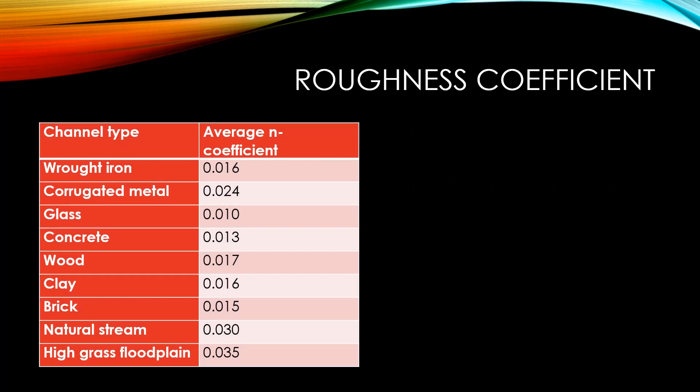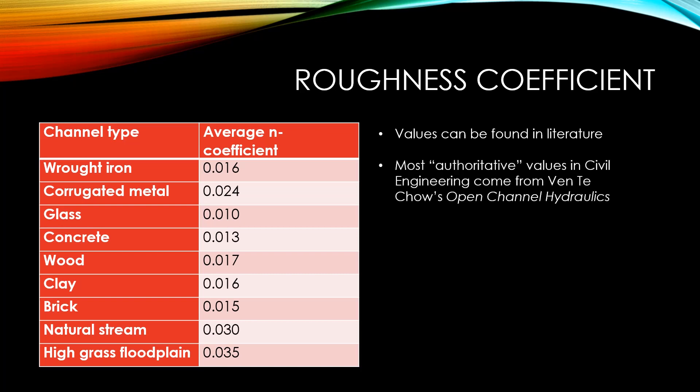The following table shows some commonly used n values in civil engineering design. These values can be found in literature, mainly books, journal articles, and websites. However, the values that are mostly used in the civil engineering field come from Ven Te Chow's open-channel hydraulics. His values are used extensively in civil engineering design. However, these values may be modified to account for pipe conditions.